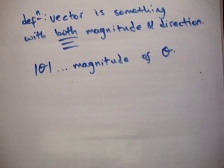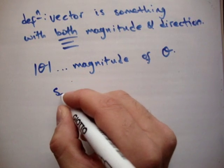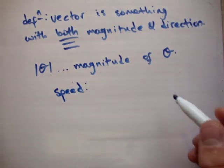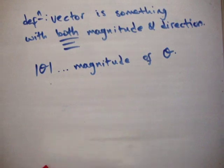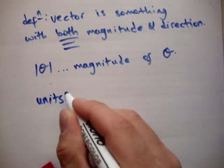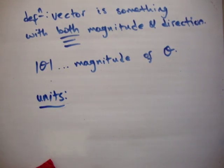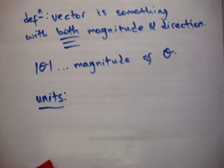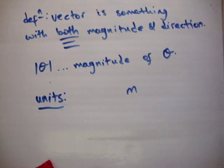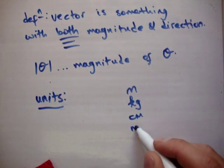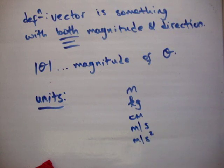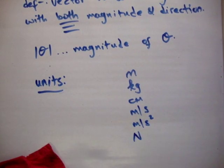Before I talk about that, I'm going to talk about something else called units. Now, I hope you've heard of units before. Units are the way something is measured. So, for example, a unit could be meters. It could be kilograms. It could be centimeters. It could be meters per second, meters per second squared, newtons. So, they're units.